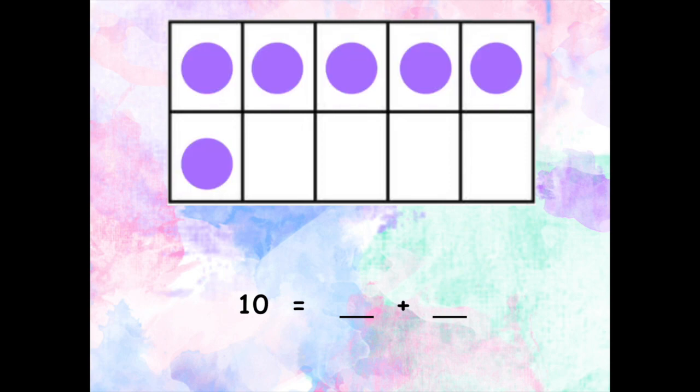I could put some purple counters in my 10-frame. To show 10, I need to fill up the rest of the 10-frame with my other color, like this.